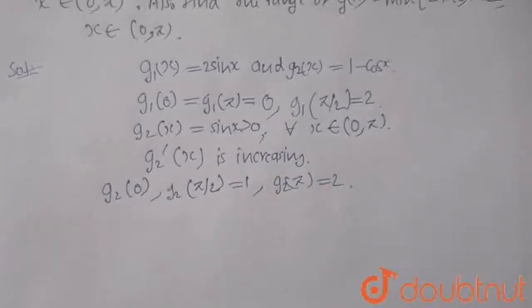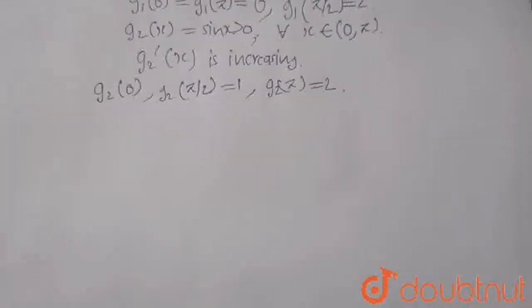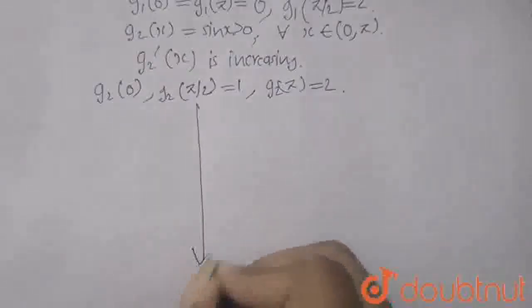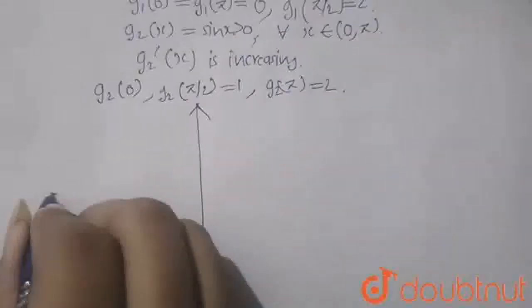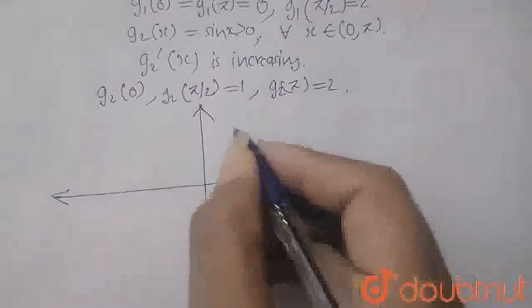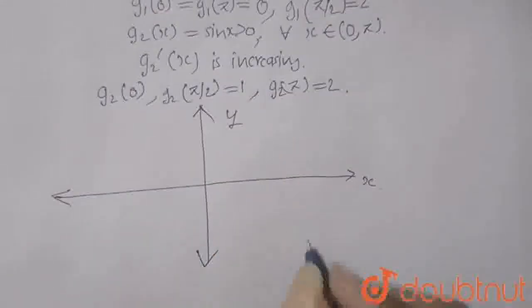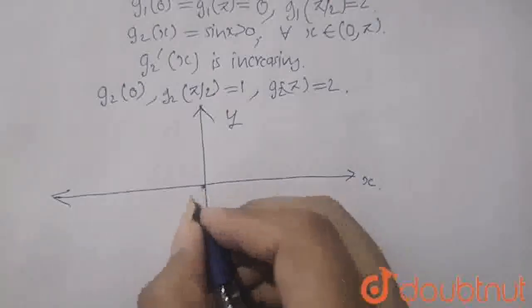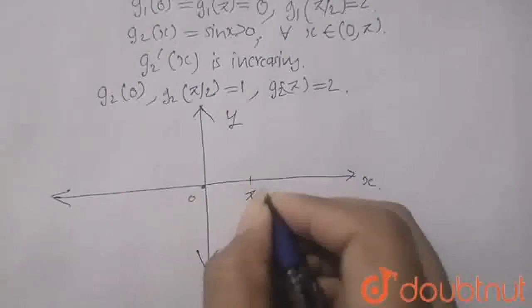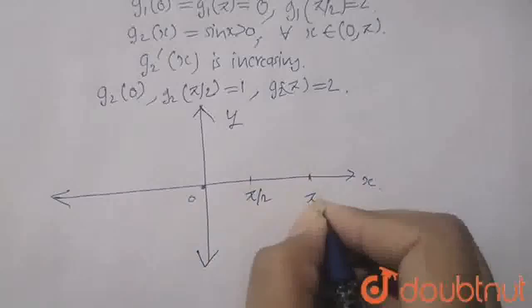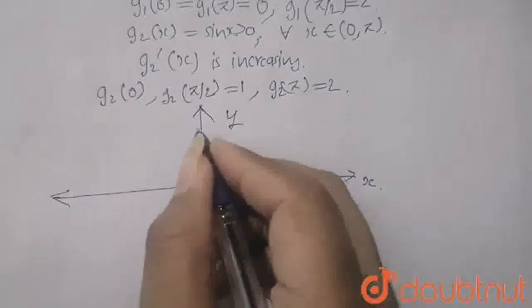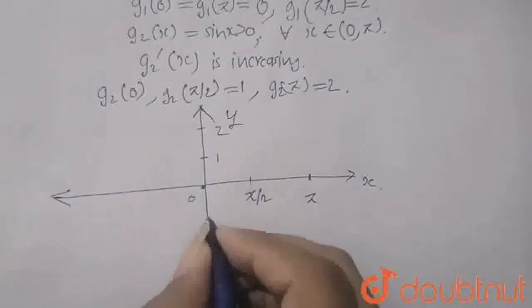So when you draw the graph of the function, I am drawing here the graph like this. So this is my y part, this is my x part. And I am labeling it. This is 0, this is pi by 2, this is pi. It is 1, it is 2. Here is minus 1.